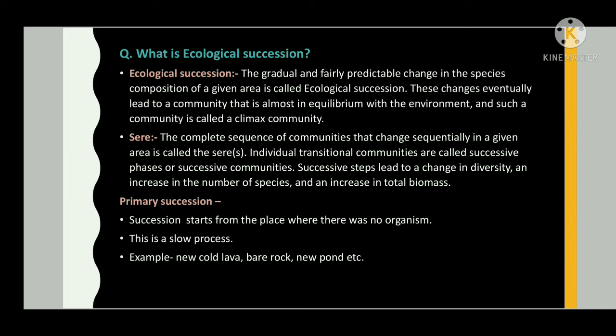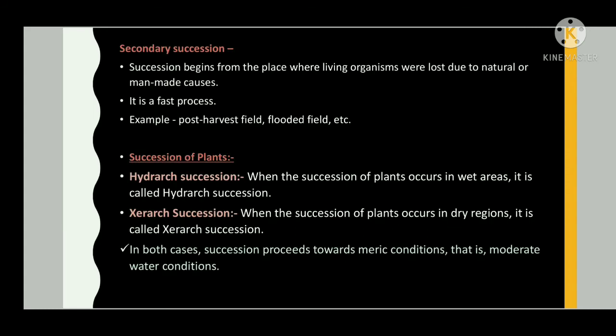Primary succession starts from a place where there were no organisms; this is a slow process. Examples include new cold lava, bare rock, and new ponds. Secondary succession begins from a place where living organisms were lost due to natural or man-made causes; it is a fast process. Examples include post-harvest fields and flooded fields.